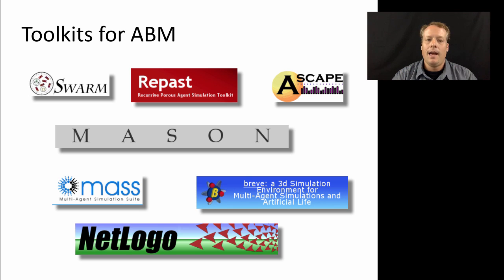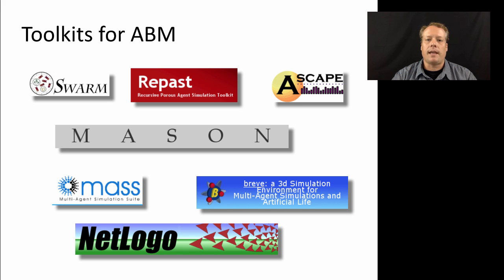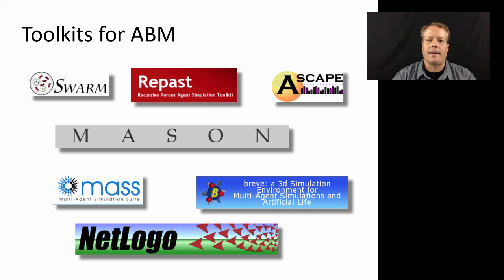We've already briefly mentioned one of those toolkits, NetLogo, which is the one we'll be using throughout this course. But there's a suite of other toolkits available. For instance, there is Swarm — the ancestor of all agent-based modeling toolkits — developed at the Santa Fe Institute in the early 90s, written in Objective-C. Swarm still exists and is still used; there's even an annual meeting called SwarmFest around its development and agent-based modeling more generally.